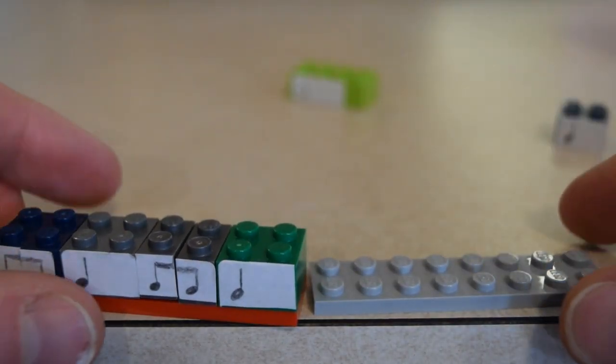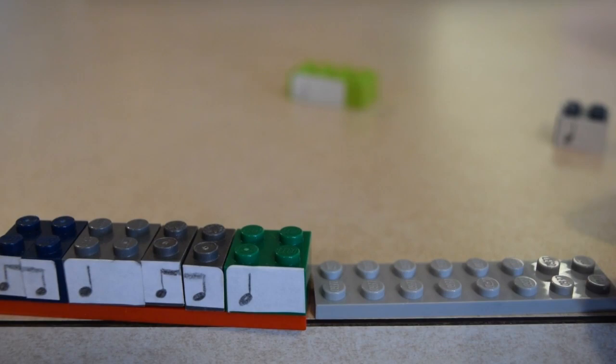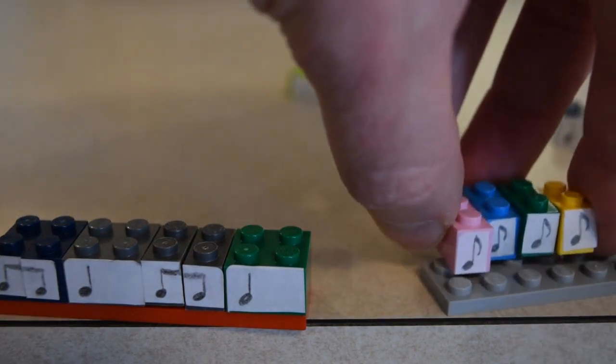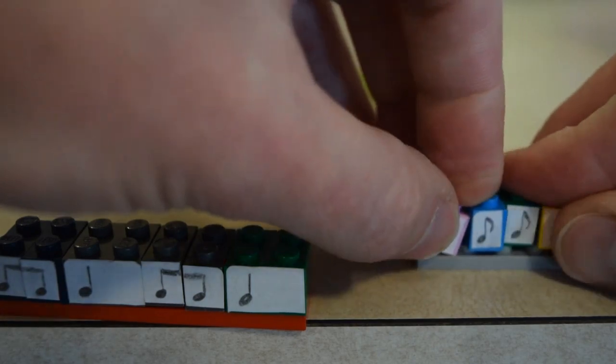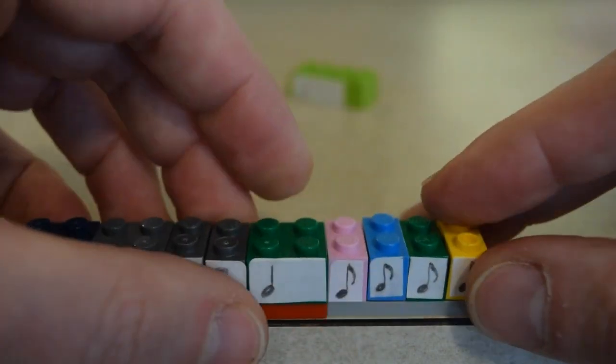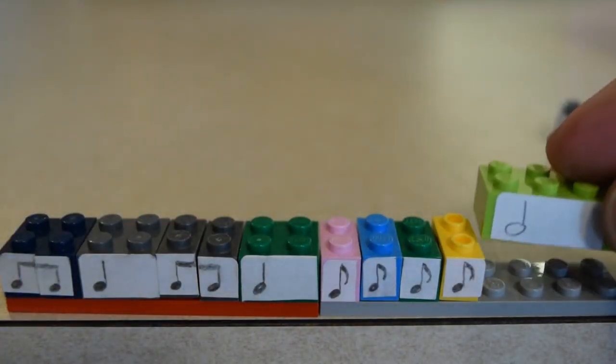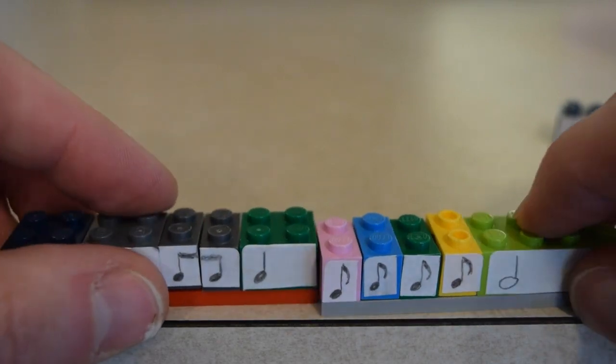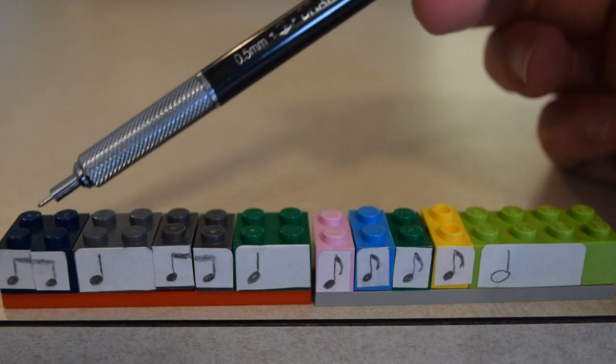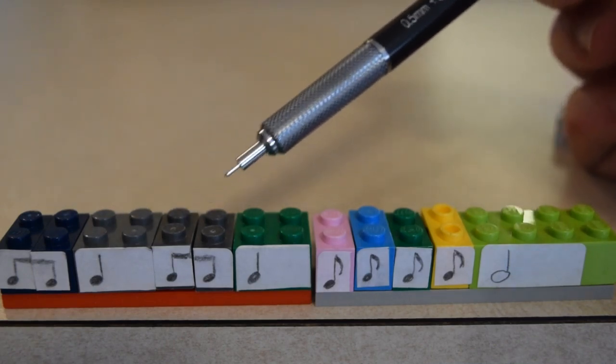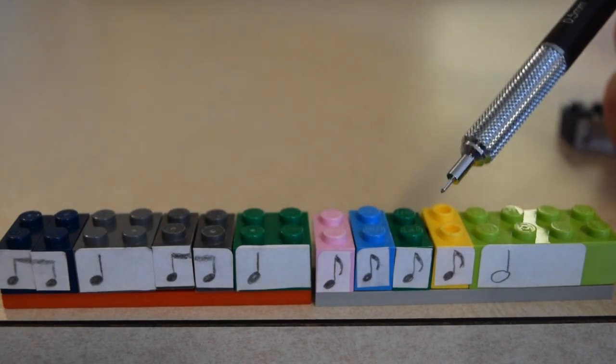So we've got jingle bells, jingle bells. We need four eighth notes. Jingle all the half note. So there's our full jingle bells rhythm. Jingle bells, jingle bells, jingle all the way.